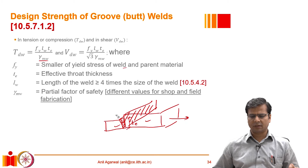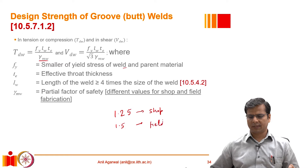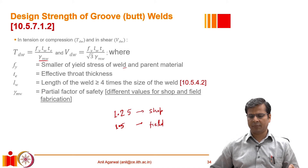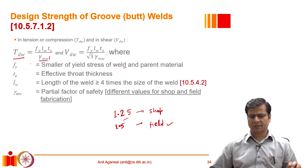There are two different values of partial safety factor for welded joints in the Indian code: it is 1.25 for a shop weld and 1.5 for a field weld. The reason for the larger value for field welds is that in the field there is a higher likelihood of introducing impurities, sharp surfaces, or incompletely fused surfaces into the weld. Because field welds are relatively less reliable, the factor of safety is increased and the design strength is decreased.